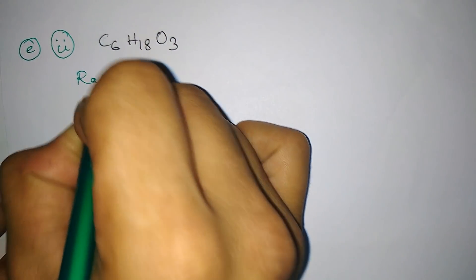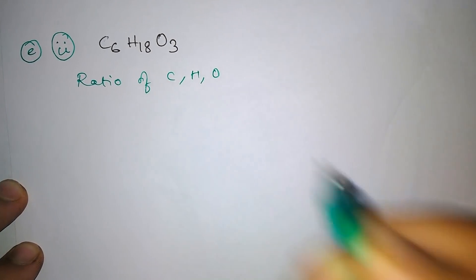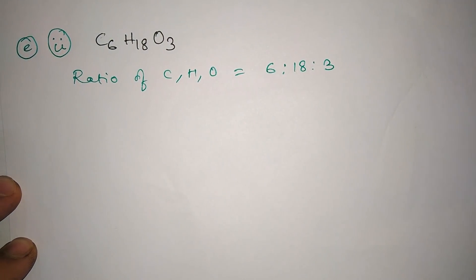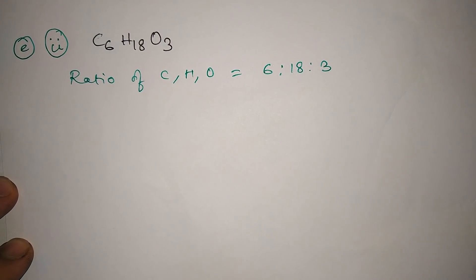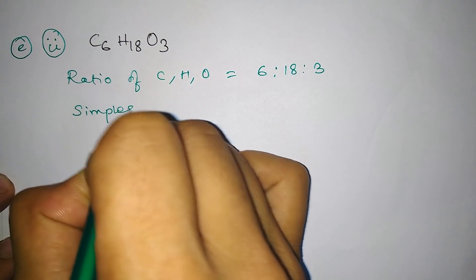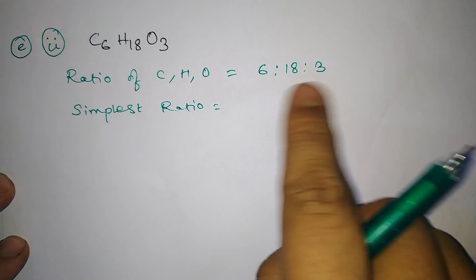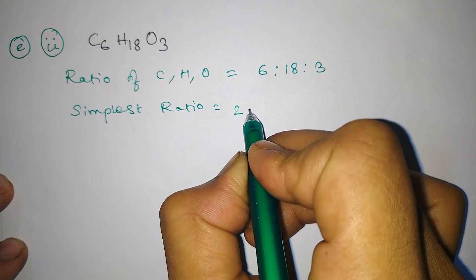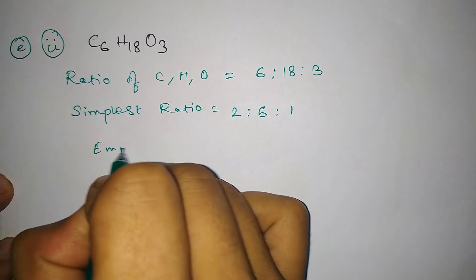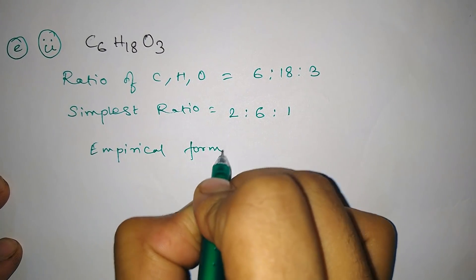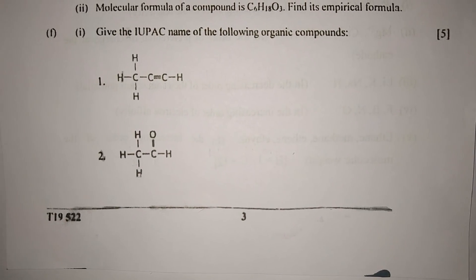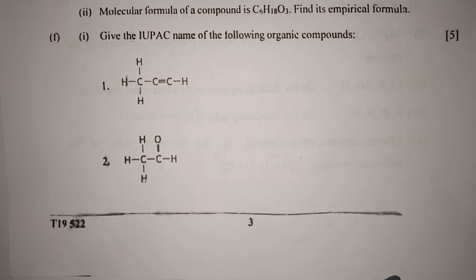Part two: Molecular formula of a compound is C6H18O3. Find its empirical formula. We have to first find the ratio of the elements, that is C, H, and O in the compound. It is 6 is to 18 is to 3. Now we have to find the empirical formula. Empirical formula denotes the simplest ratio of the elements in the compound. The common factor is 3, so we divide by 3: 6/3 is 2, 18/3 is 6, and 3/3 is 1. So the empirical formula will be C2H6O.